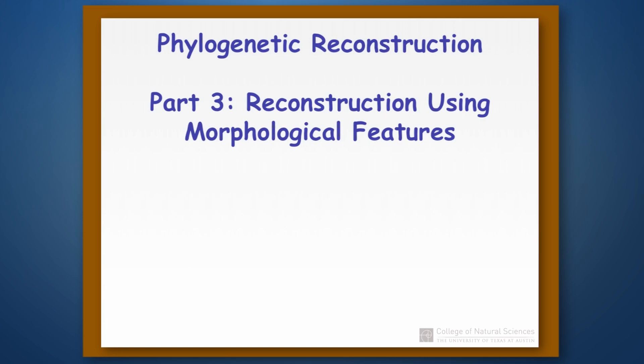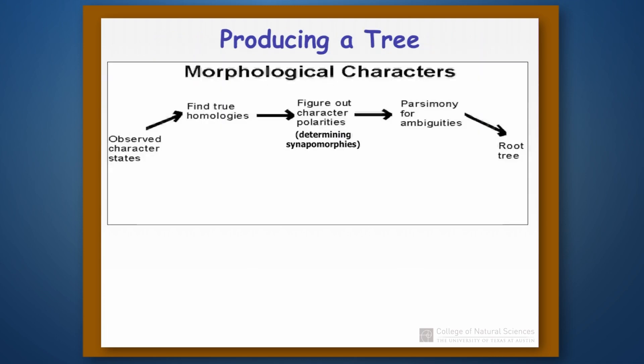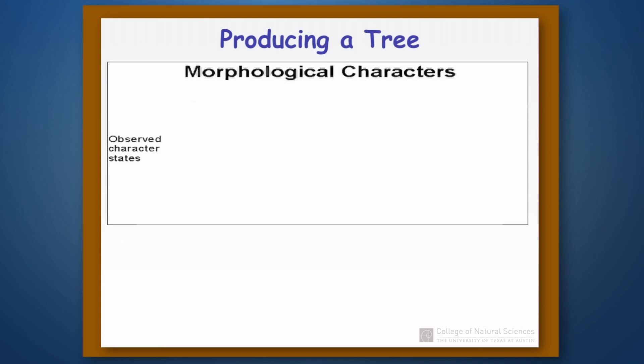This is part three in phylogenetic reconstruction. We're going to talk about how we do reconstruction using morphological features. Here's a reminder of the entire path that we're going to follow to reconstruct using morphological characters, starting with the observed character states — the data that we're going to collect in order to do our phylogenetic reconstruction.